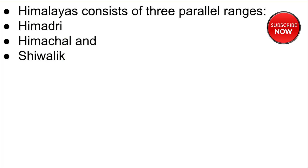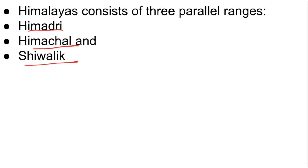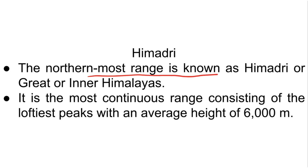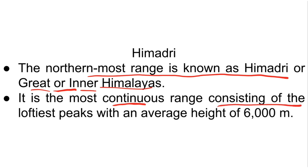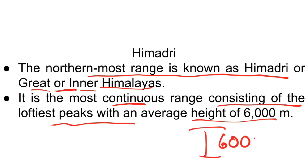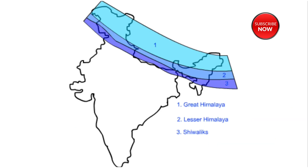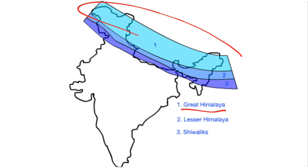The Himalayas consist of three parallel ranges: Himadri, Himachal, and Shivalik. Himadri is the northernmost range, also known as the Great Himalayas or Inner Himalayas. It is the most continuous range, with an average height of 6000 meters — this is very important and frequently asked in exams.